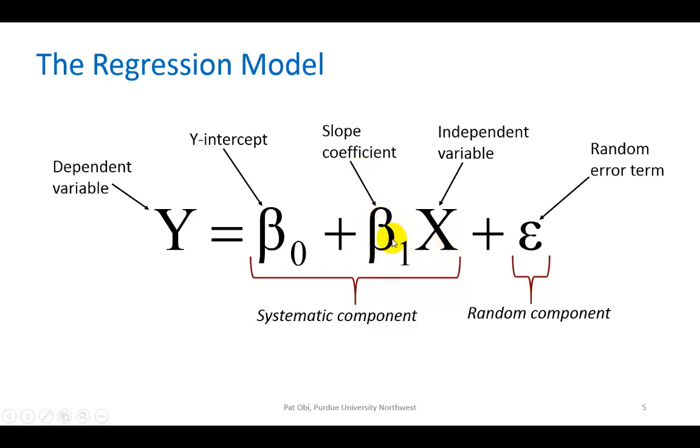And this beta one, the coefficient of X, is going to tell us the weight of impact that X has on Y. For example, if beta one comes out to be two, then it tells us that when X moves around, the impact on Y is twice as much. If it's zero, then X really has no impact on Y, and we cannot conclude that there is a relationship. This is the simple linear regression model, consisting of the systematic component, which is the Y-intercept and the slope parameter multiplied by X, and the random component, which is the component unexplained by the linear relationship between Y and X.